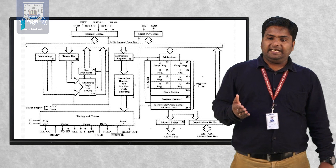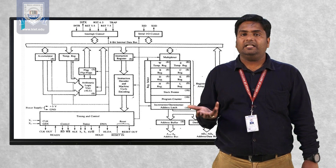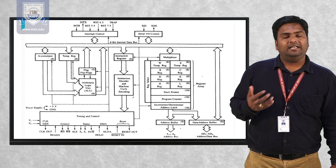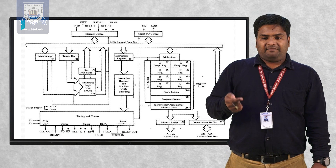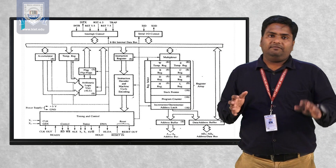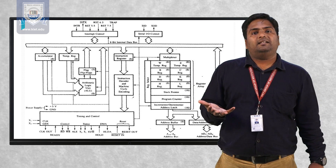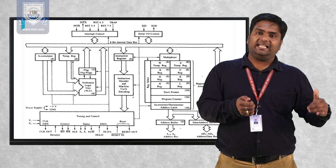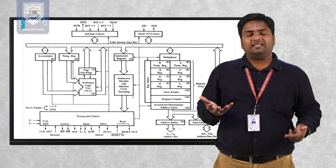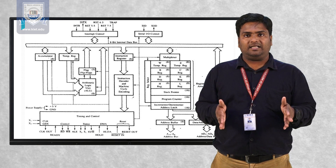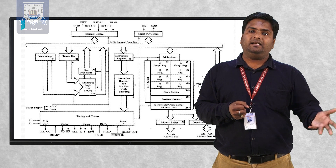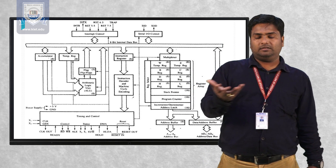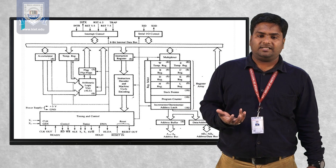Below the program counter, we have an incrementer and decrementer address latch, which is used to increment and decrement address information — it also holds 16-bit information. After that, we have an address buffer and a data-address buffer. The 16-bit address line is multiplexed: out of 16 address lines, 8 lines contain both data and address information, and the remaining 8 bits contain only address information. The data address buffer holds data information and the address buffer holds address information.